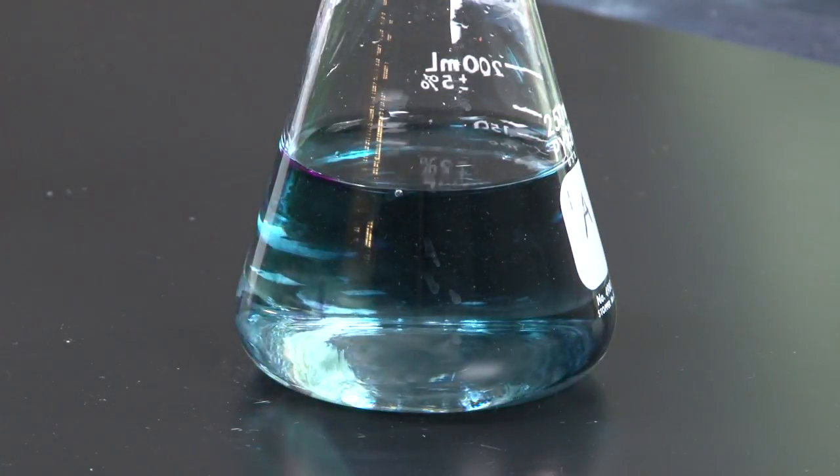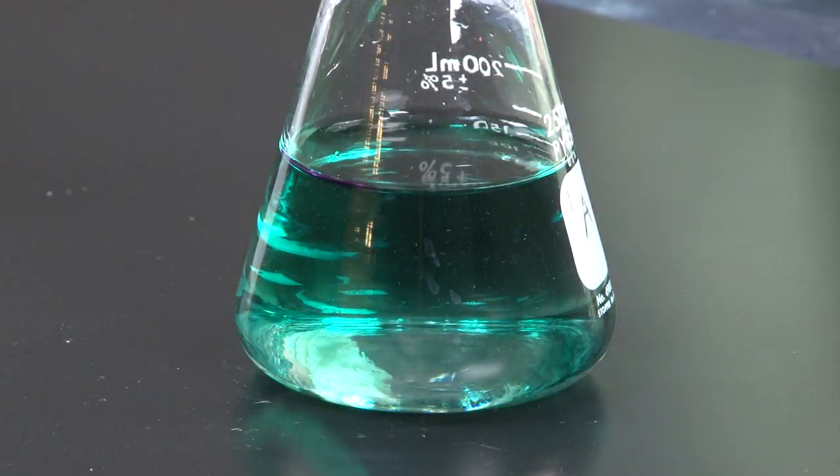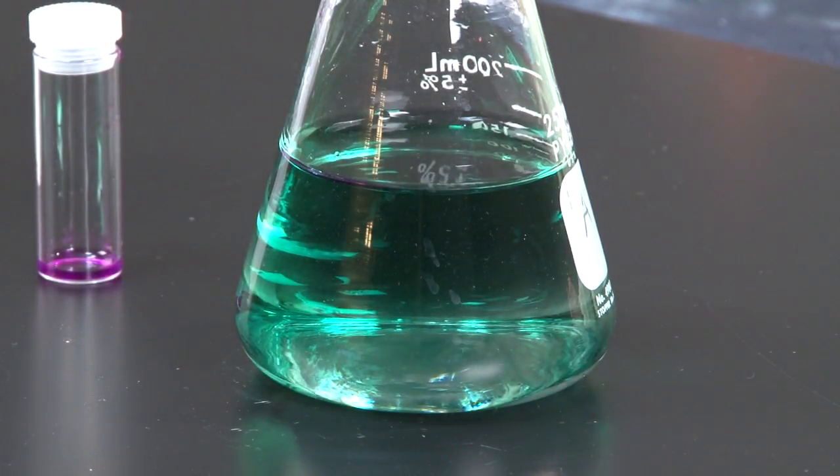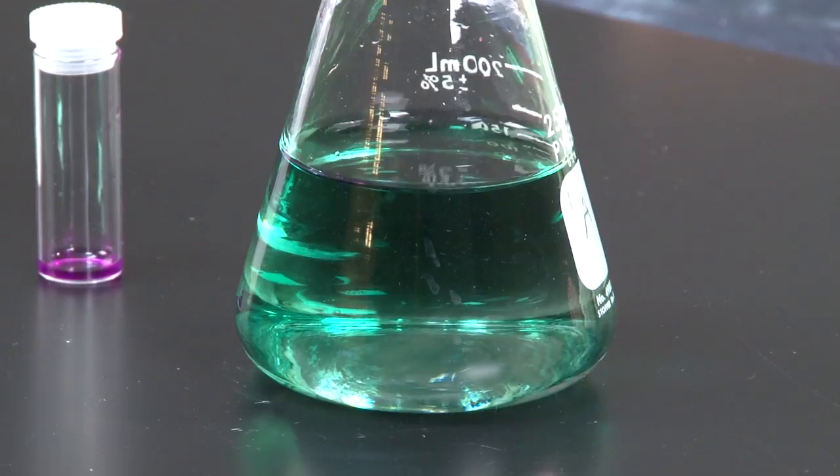As you can see, the solution is a pinkish purple that is characteristic of the permanganate ion. It quickly changes to a blue color, then to green, and will continue towards yellow.